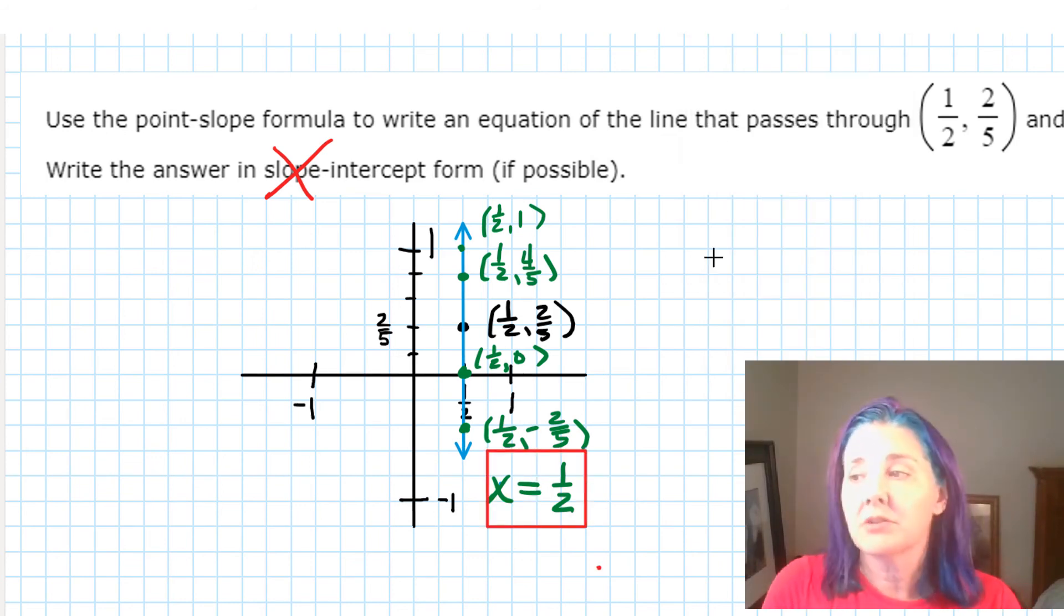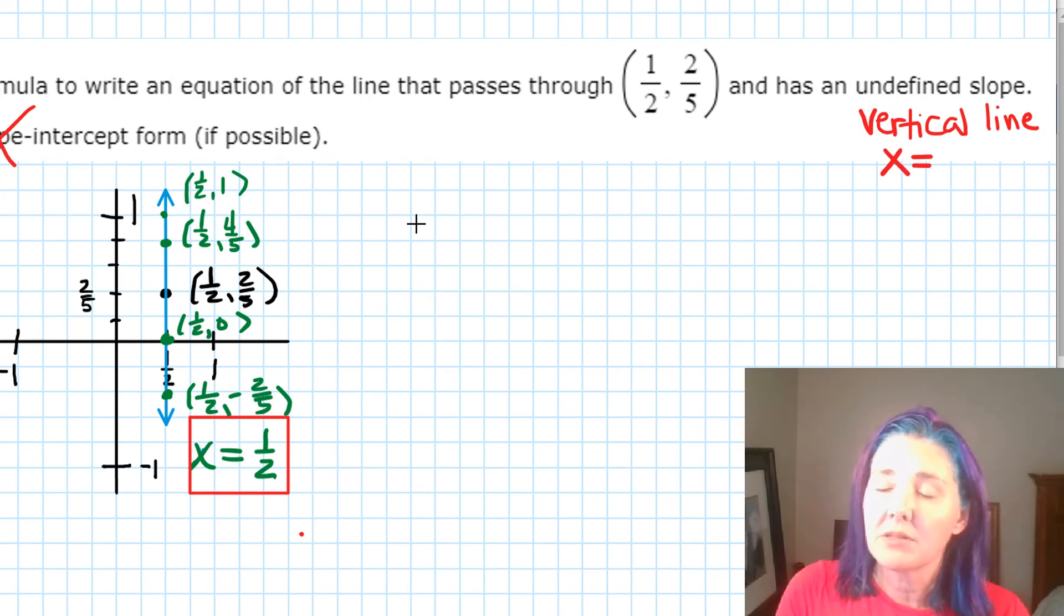So in general, when you have a vertical line, it's always going to be in the form of x equals some number a, and you just have to figure out what that x value is.